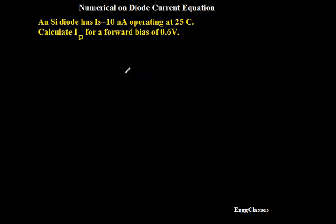In this video, we will consider the numerical. It has been stated that a silicon diode has IS, the reverse saturation current equal to 10 nanoampere, operating at 25 degree Celsius. Calculate ID for a forward bias of 0.6 volt. That is the statement.